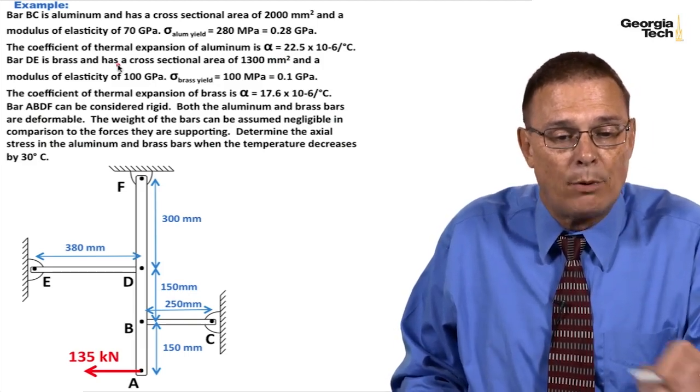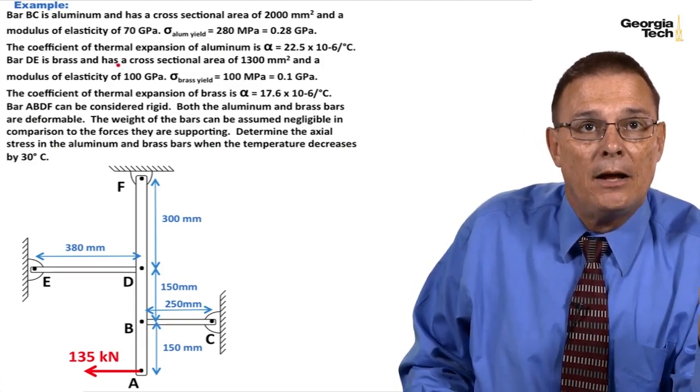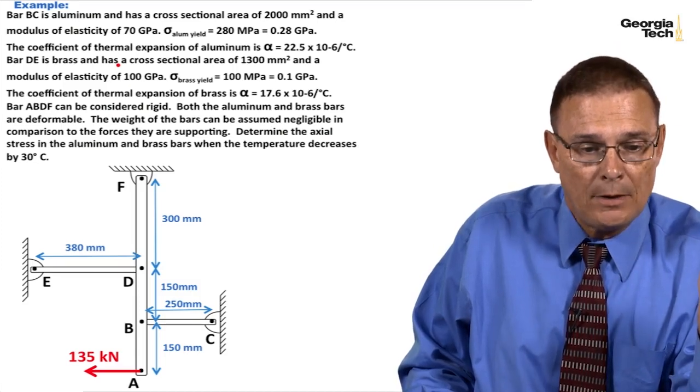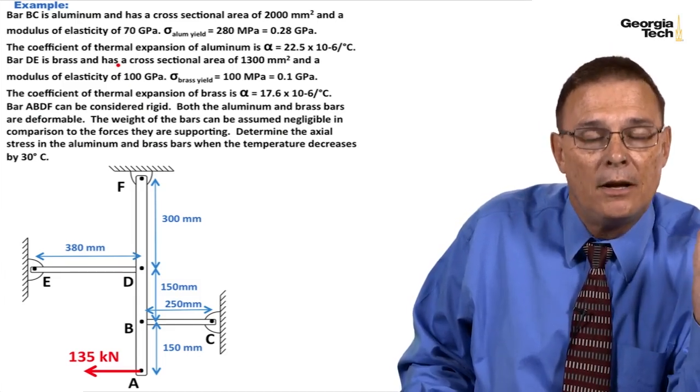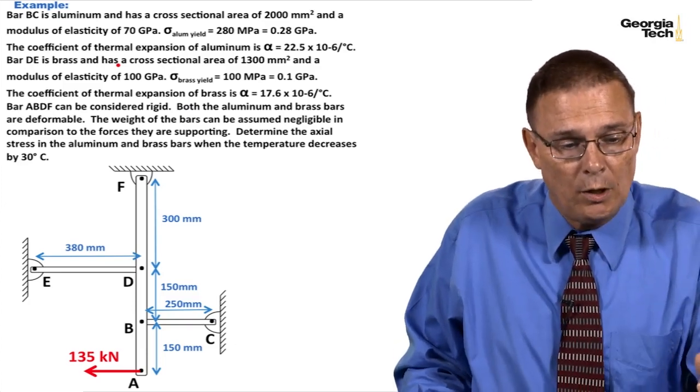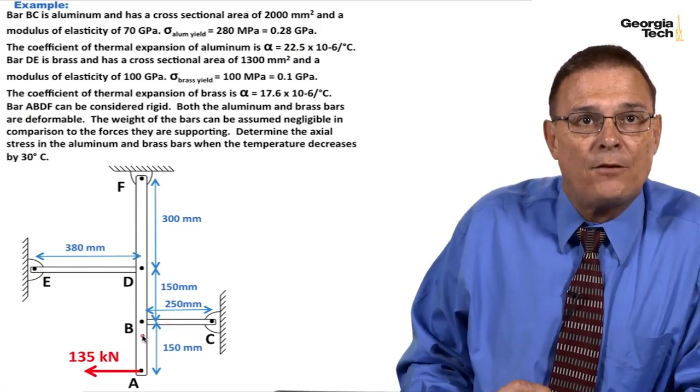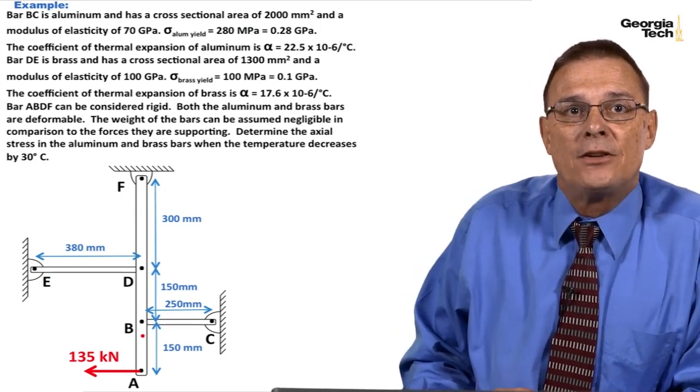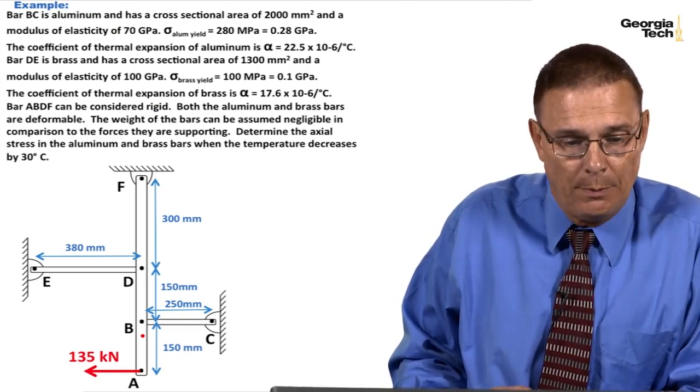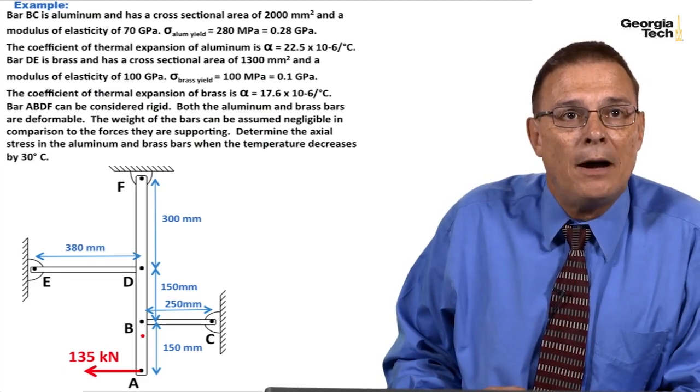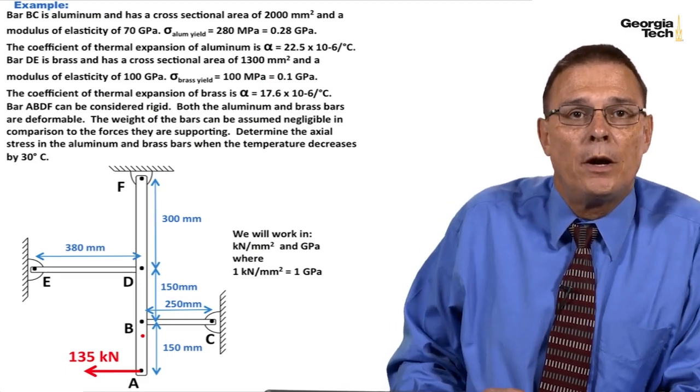Bar DE is made out of brass with a cross-sectional area of 1,300 mm², modulus of elasticity of 100 GPa, and yield stress of 0.1 GPa. The coefficient of thermal expansion for brass is 17.6 × 10⁻⁶ per degree Celsius. We'll allow these bars to deform, but we're going to assume that bar ABDF is rigid. The weight of the bars will be neglected. We want to determine the axial stress in the aluminum and brass bars when the temperature decreases by 30 degrees. We'll work in kilonewtons, millimeters squared, and gigapascals.